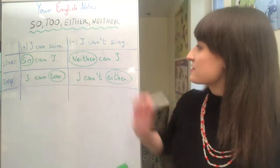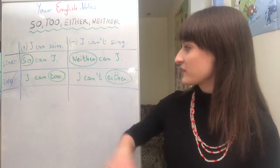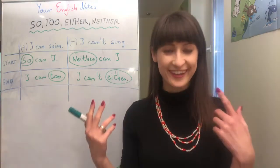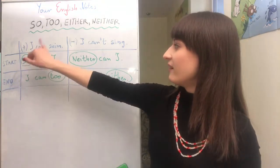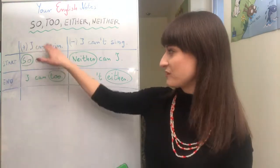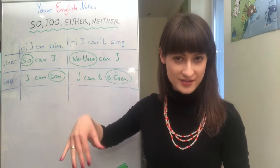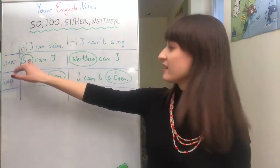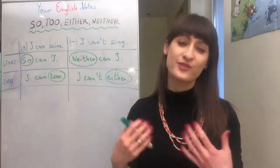Here is an easy example because we've got "can," which functions as an auxiliary verb, so we can use it directly. Sometimes you can have a problem because, for example, when there is a present simple, you have to use "do" or "does" depending on the person. For example, if someone says "I like pizza," you have to say "so do I" — we don't have "do" in the original sentence. If it's a past simple, like "I liked pizza," and you want to agree, then you have to say "so did I."